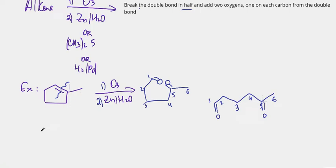Now I'm going to give you another example. Let's say you have a double bond like this. And same thing here. Let's say we have O3. Let's switch it up and do (CH3)2S as our secondary reagent. All you need to do is you break the double bond in half.